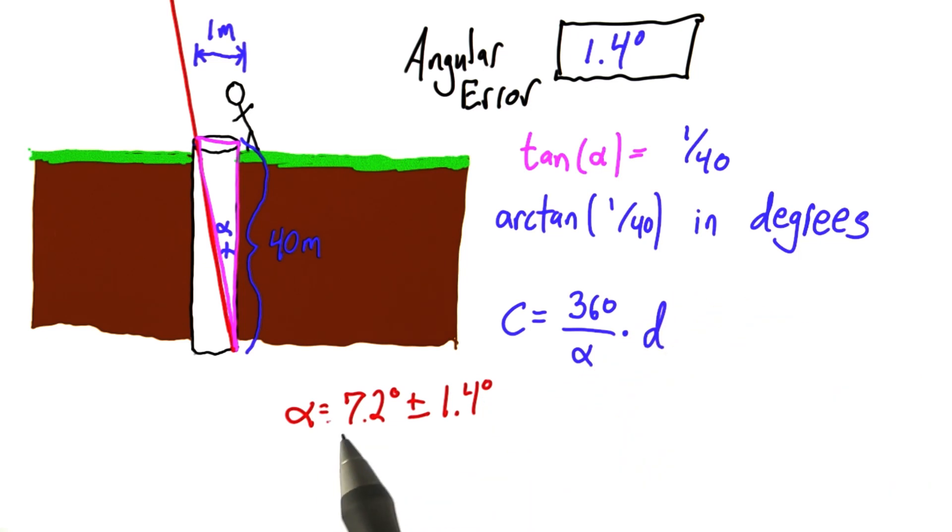So that tells us, I know that alpha is near 7.2, but I'm not sure exactly where it is. It's within 1.4 degrees.